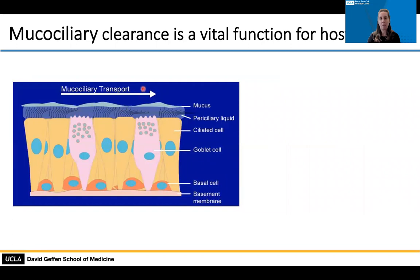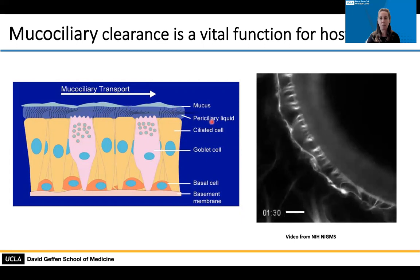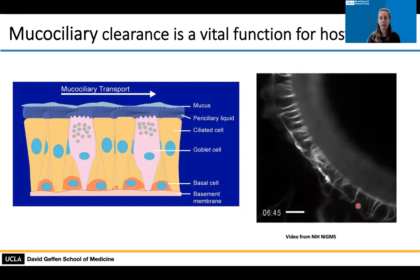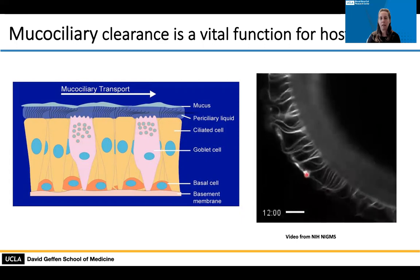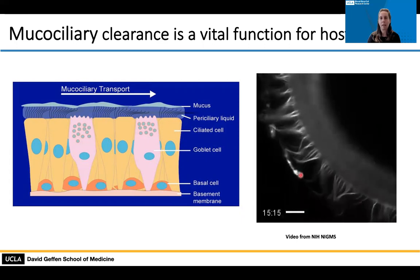This mucociliary epithelium is really important as a host defense. It uses mucus made by the epithelium to trap viruses, bacteria, pollution, and any harmful particles we breathe in. There are specialized cells with hair-like projections known as cilia, and all of these cilia beat unilaterally to move this mucus up and out of the body. This is illustrated by a movie here, where you can see this unilateral beating of the cilia to move a particle of dirt up and out of the body.